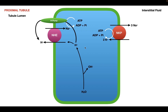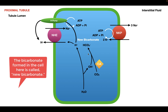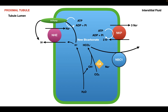The hydroxide ions combine with carbon dioxide to form bicarbonate, and this reaction is catalyzed by the enzyme carbonic anhydrase. This bicarbonate can then be transported across the plasma membrane into the interstitial fluid through the sodium-bicarbonate co-transporter, which co-transports three bicarbonates and one sodium.